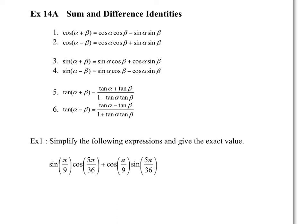So for example, if we had the cosine of the sum of two angles, like 30 and 45 degrees, you can now find the exact value of cos of 75 degrees. These are the formulas you could use — either the sum of the angles or the difference.